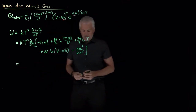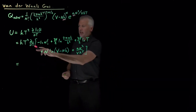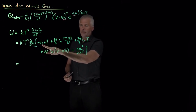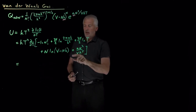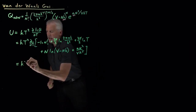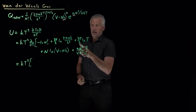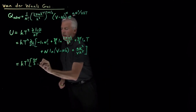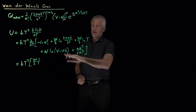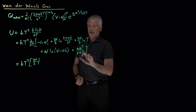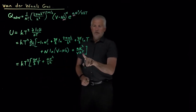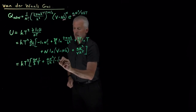Taking the temperature derivative, most terms don't contribute — there's no T in log N factorial, and no T in the constant kinetic prefactor term. We are left with the temperature derivative of log T, giving 3N/2 times 1/T from that term. The volume term has no temperature dependence, but the last term does have a T, so its temperature derivative gives an²/Vk times minus 1/T².